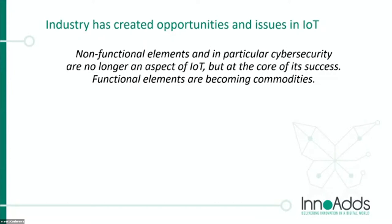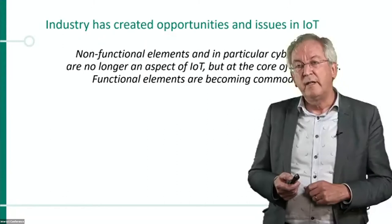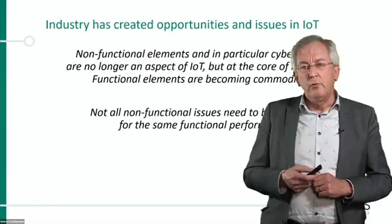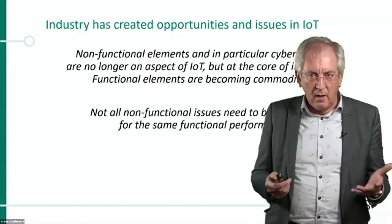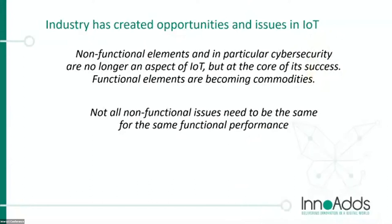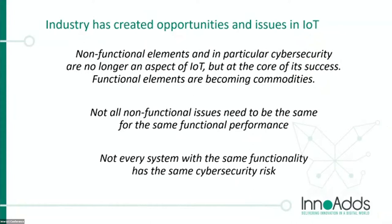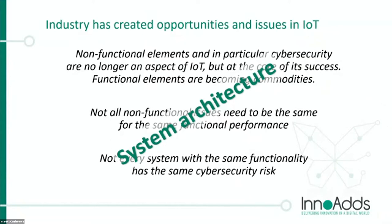The functional elements, where all businesses have focused — more buttons, more colors, more inches — are becoming commodities. You can order anything on the internet to make a functional smart home, smart city, or whatever. But the non-functional aspects you can't order on the internet — that's where you have to invest. Not every system with the same functionality has the same cyber security risk, and this is what in technical terms we call system architecture — we have to think about how to construct our system.